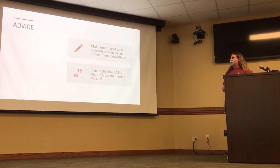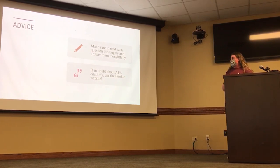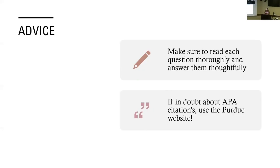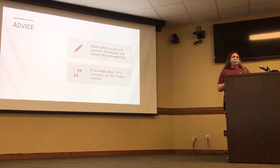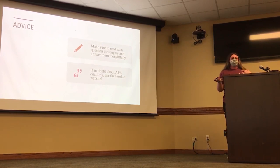Advice for assignment two: make sure you read the questions thoroughly and answer them thoughtfully. A lot of people had issues with question four. I felt like some people rushed through their answers and didn't pay attention to exactly what we were asking. That's why we have the actual question and the rubric, so you can follow along and know what we're looking for. For citations, just use the Purdue website. Scribbler sometimes has good explanations too. And if you still have an issue, I have an example of an APA paper I can email.